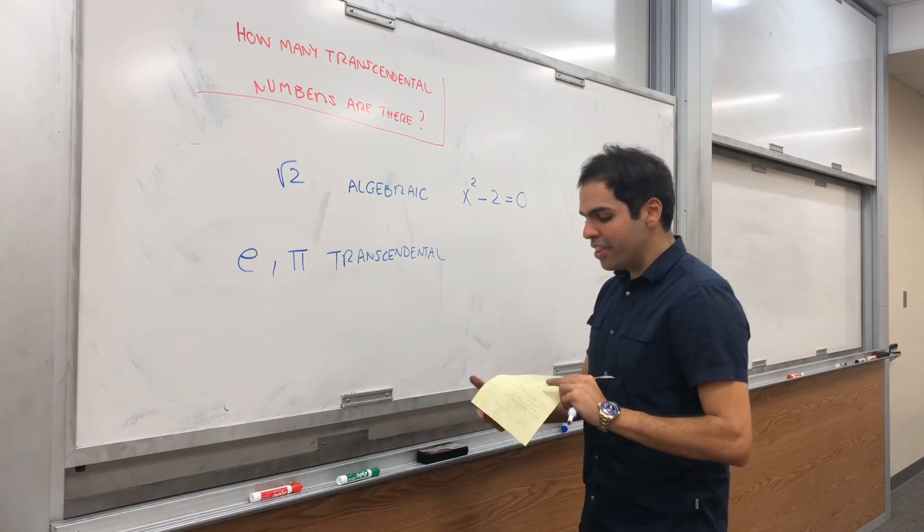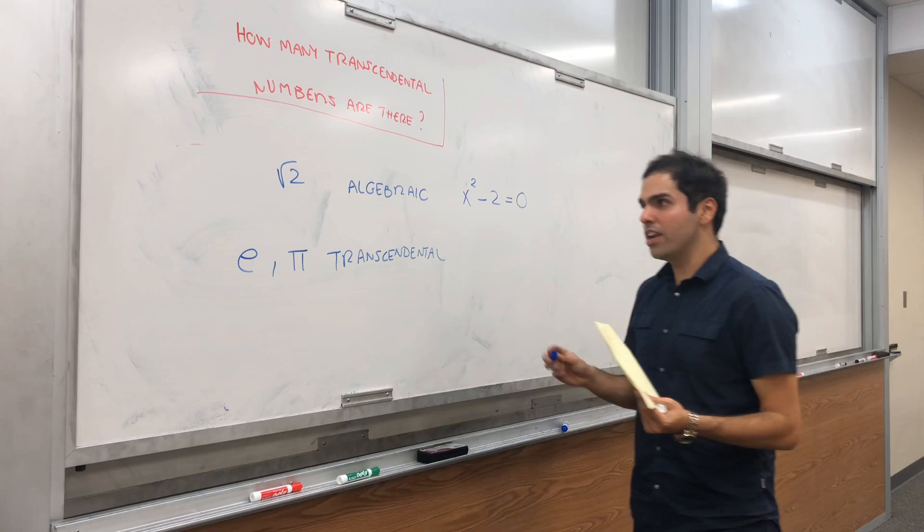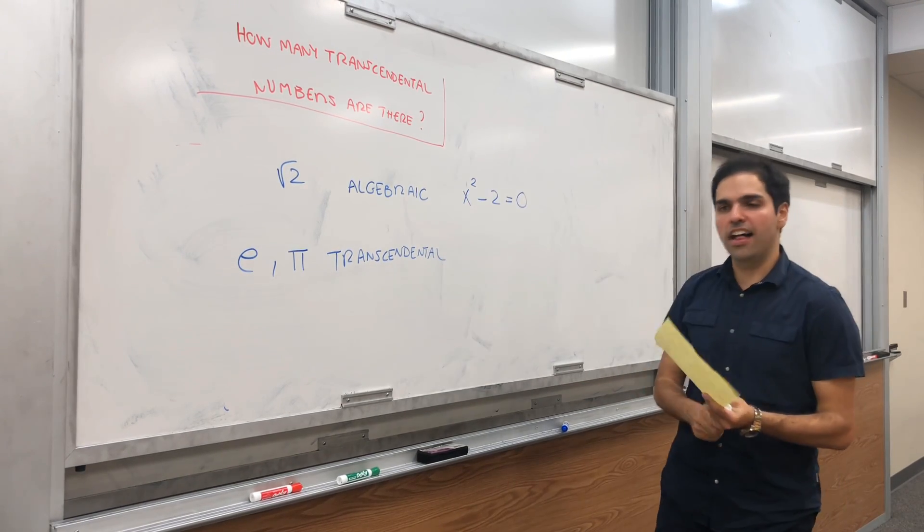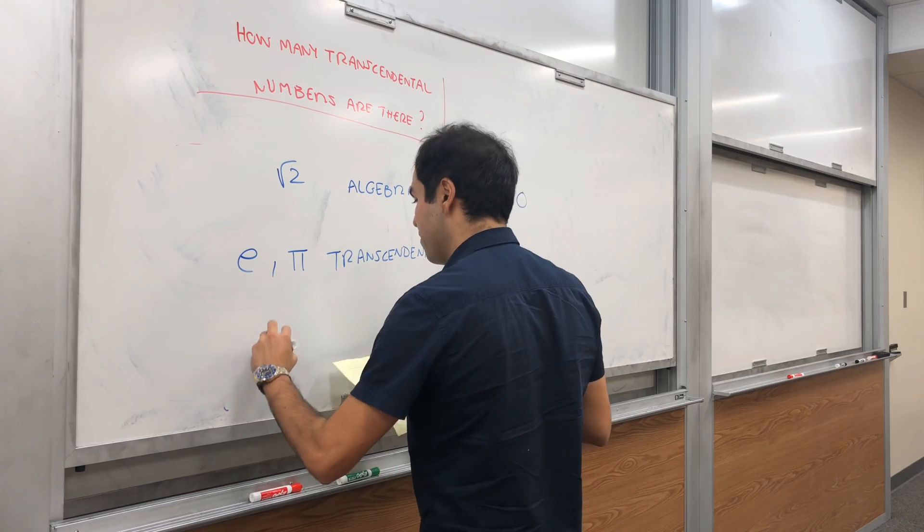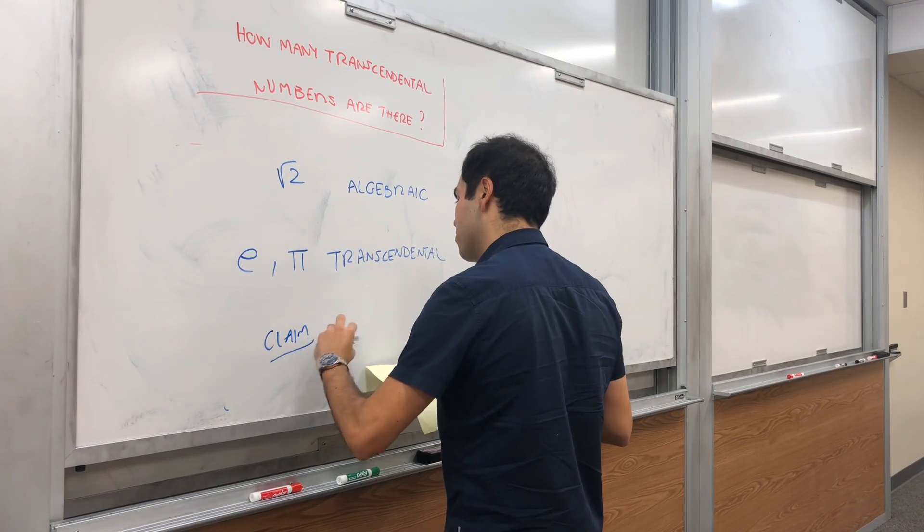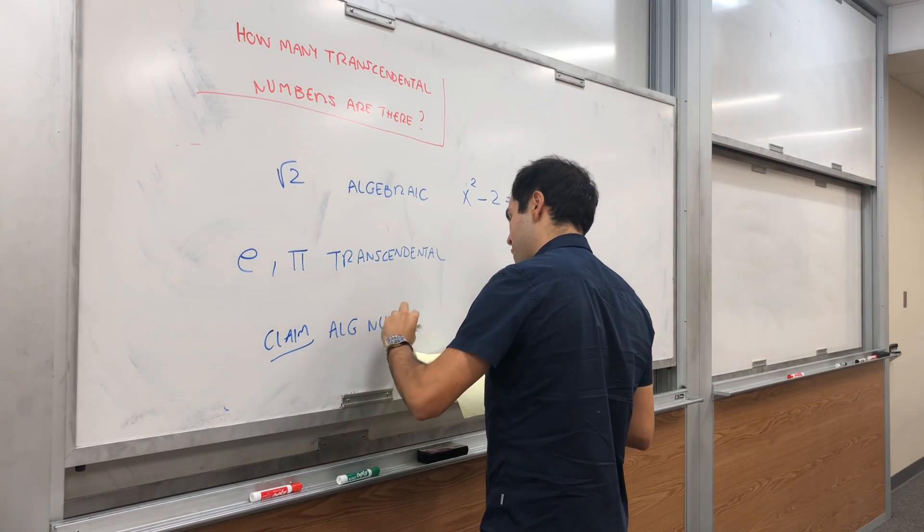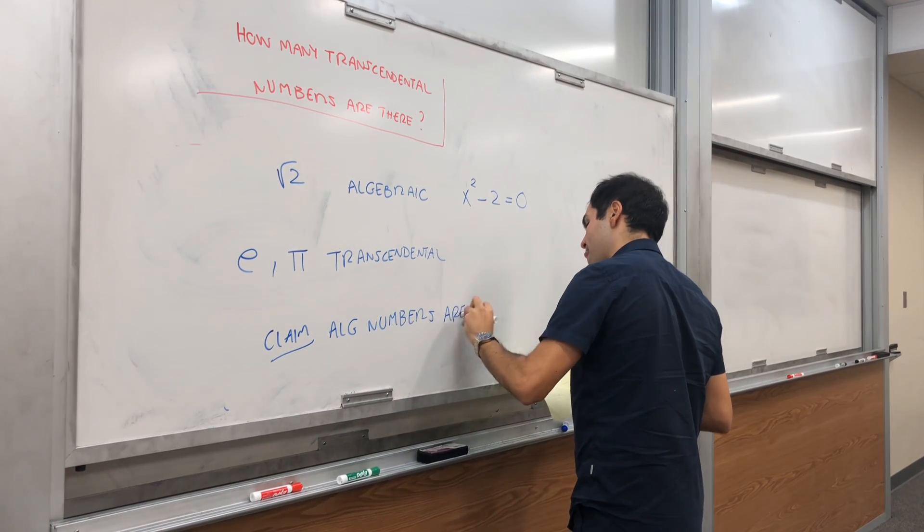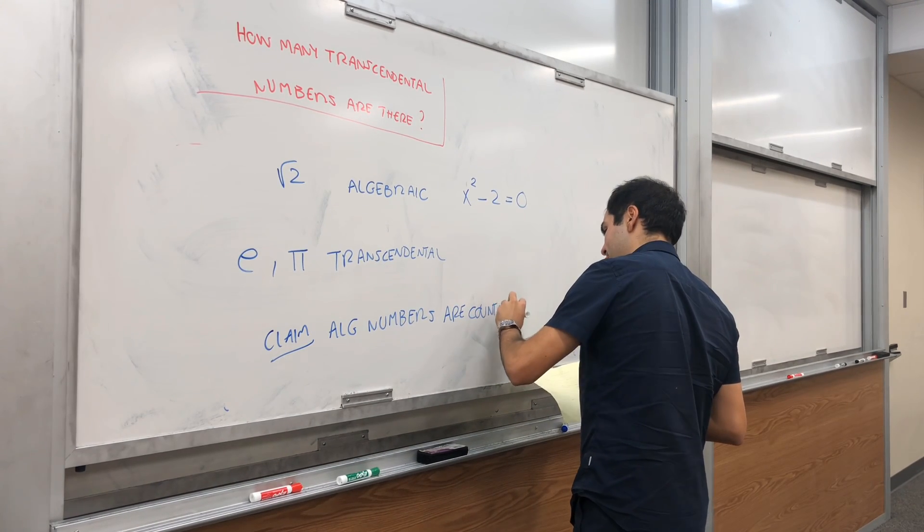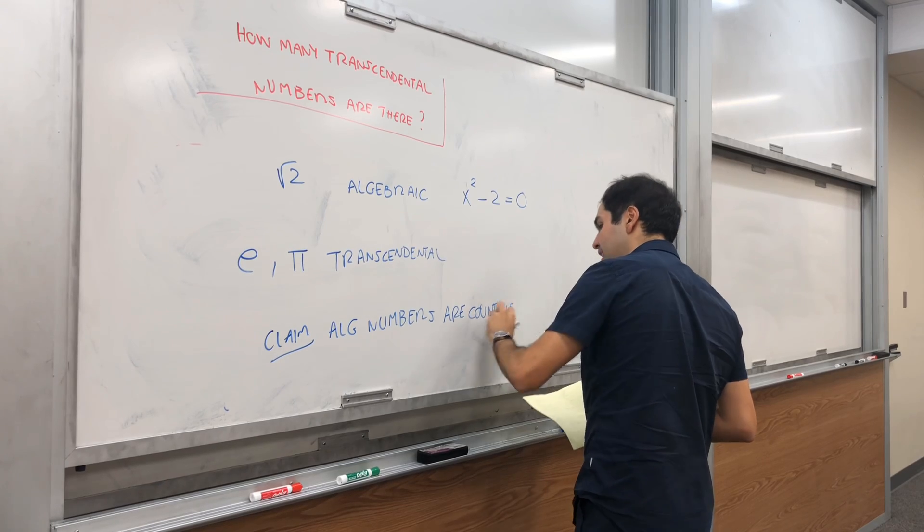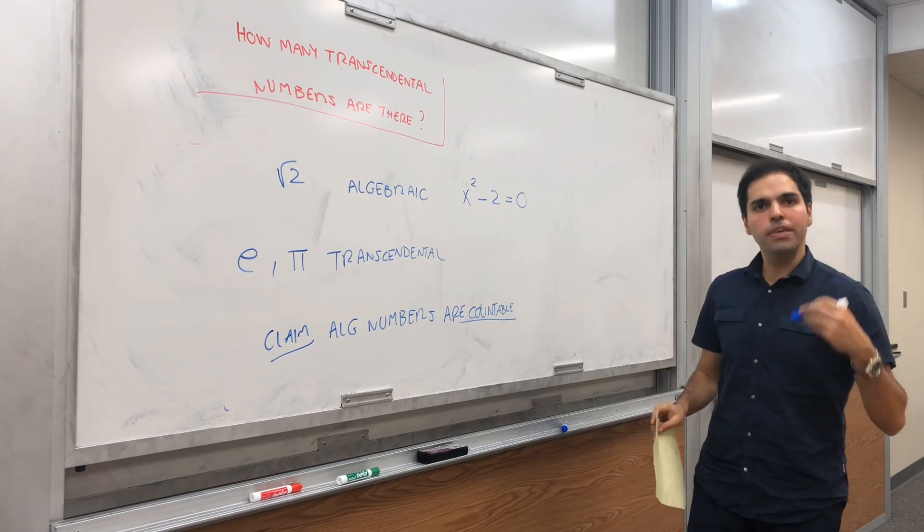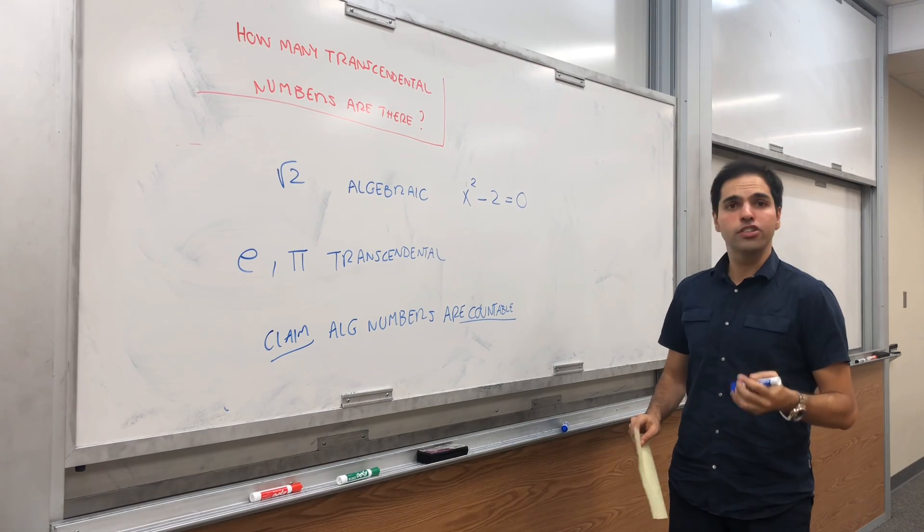And how do you do that? Namely, what I want to show today is that you can actually count all the algebraic numbers. So the claim is: algebraic numbers are countable. In other words, if you had an infinite amount of time, you would actually be able to count all the algebraic numbers.